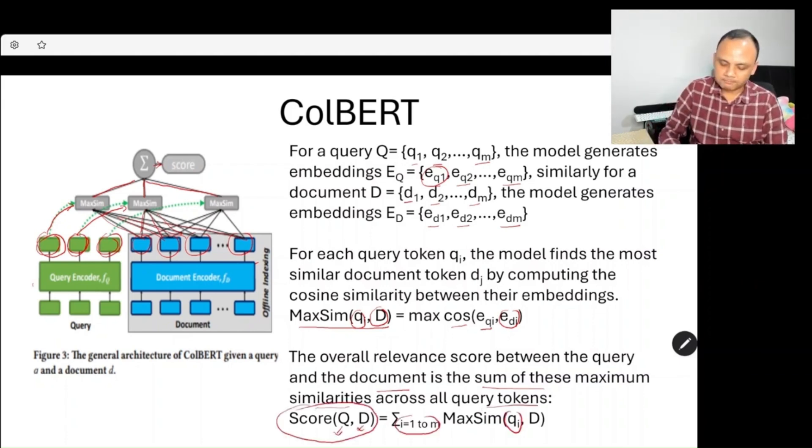This is how the relevance score gets calculated, and that score is used to retrieve the most relevant documents. This is the ColBERT strategy.